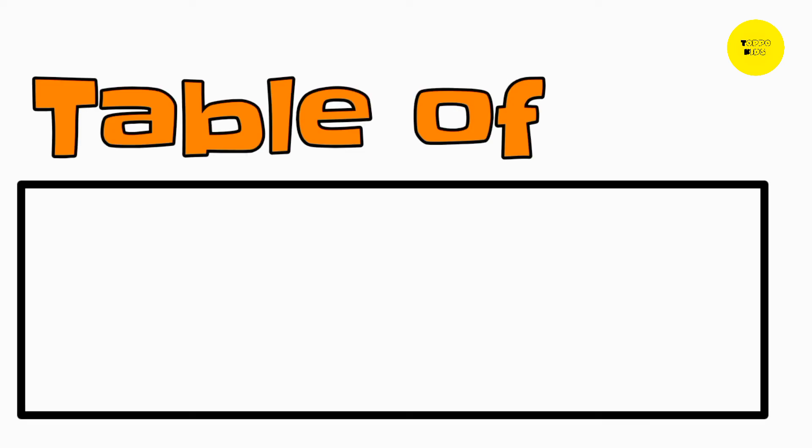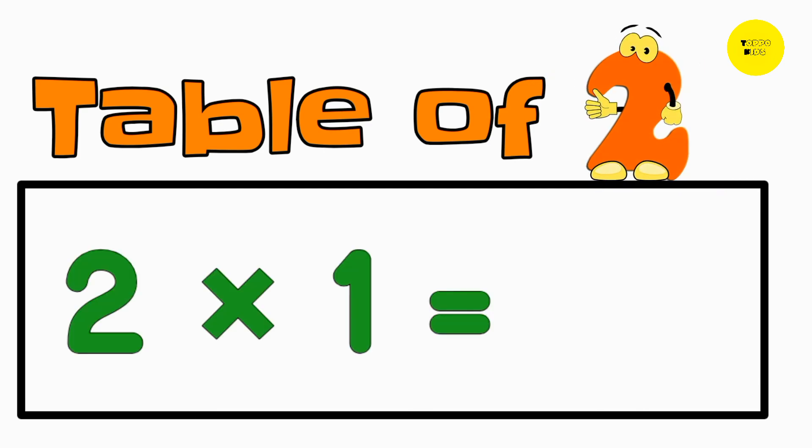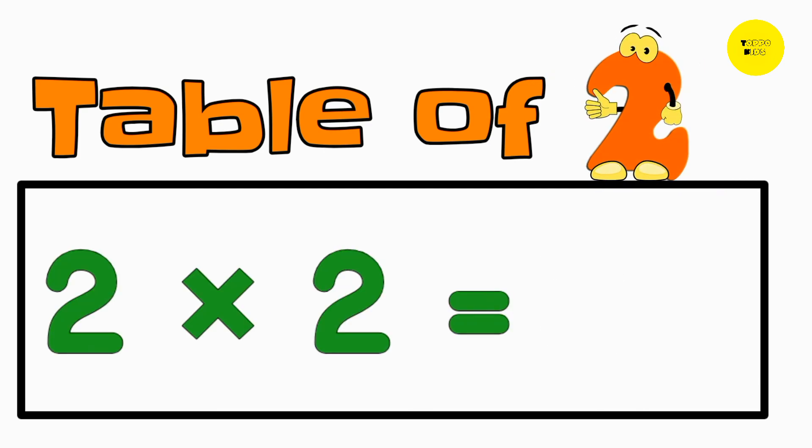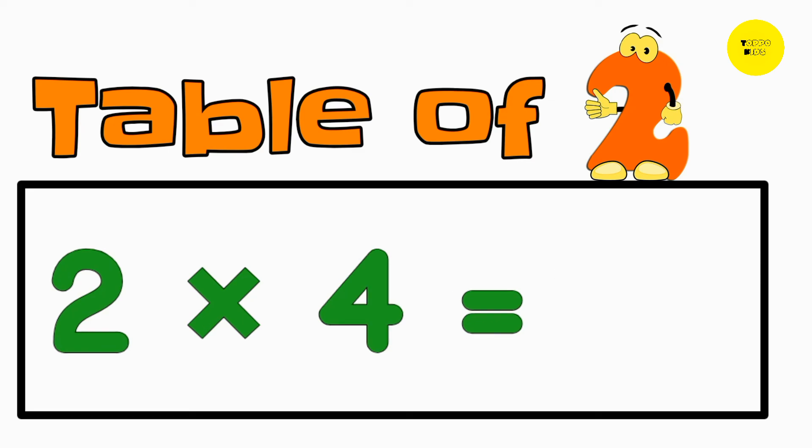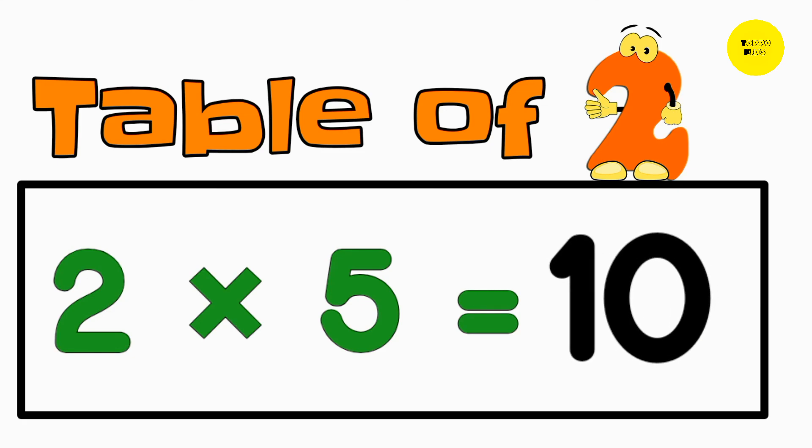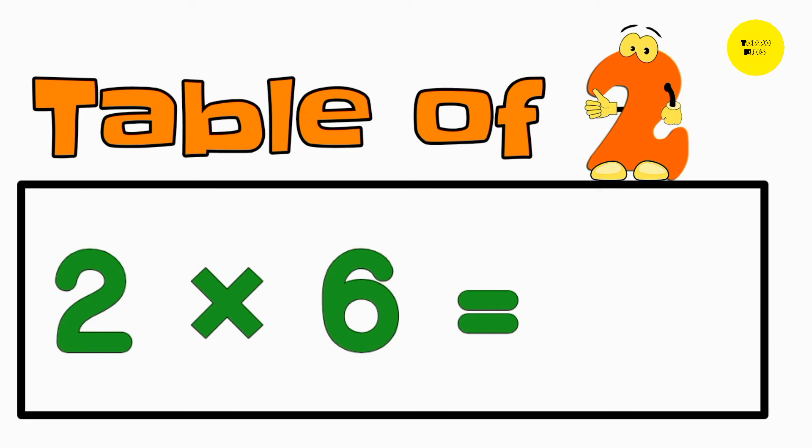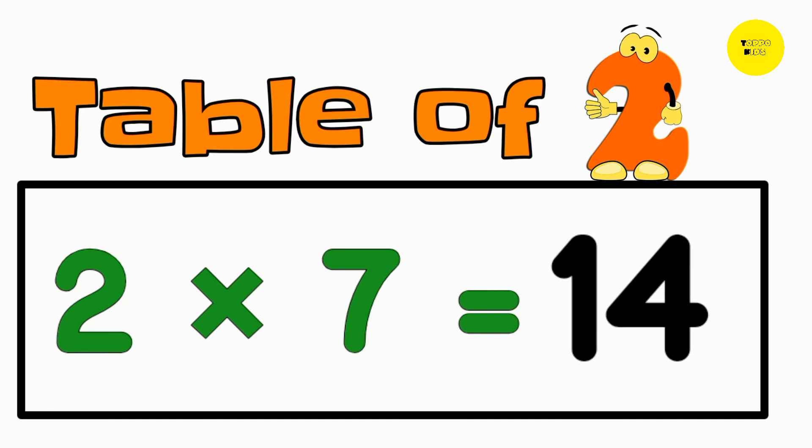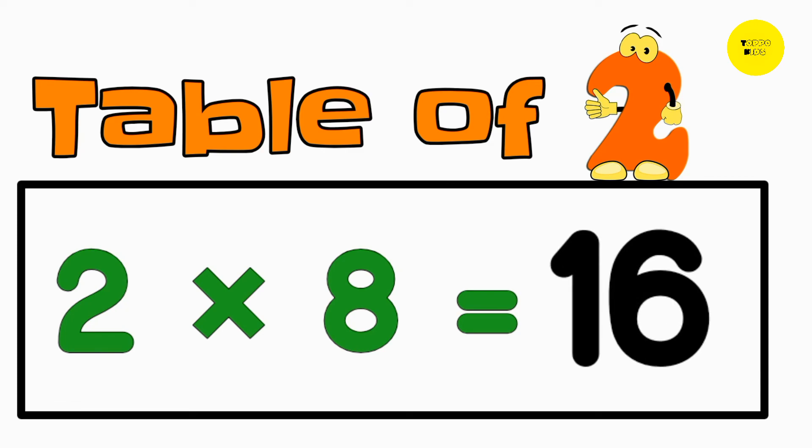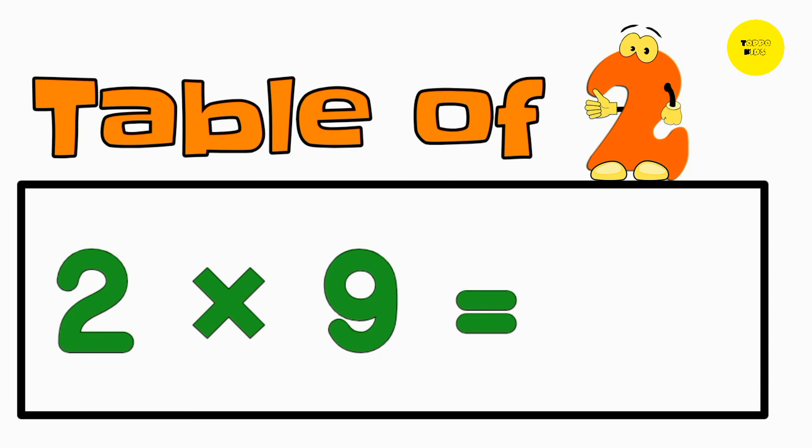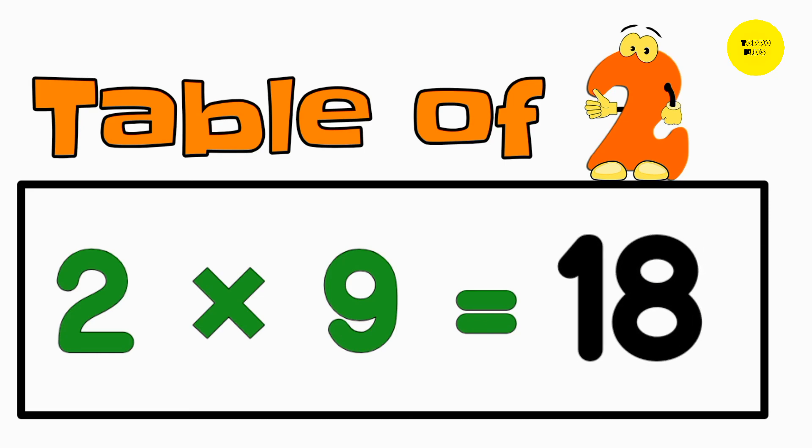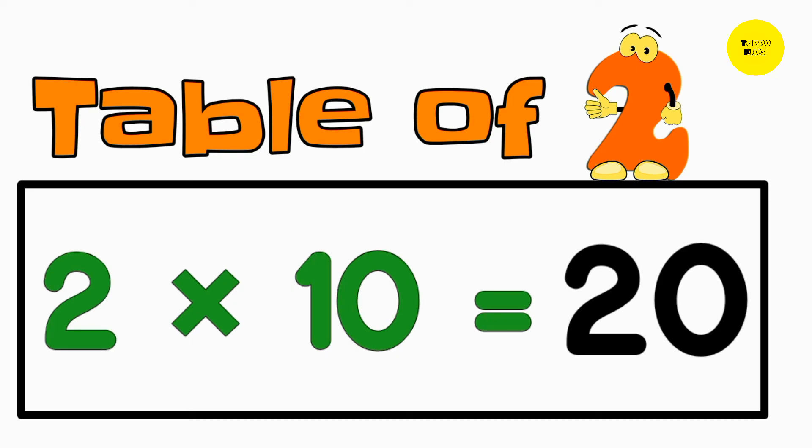Table of 2. 2 one's are 2, 2 two's are 4, 2 three's are 6, 2 four's are 8, 2 five's are 10, 2 six's are 12, 2 seven's are 14, 2 eight's are 16, 2 nine's are 18, 2 ten's are 20.